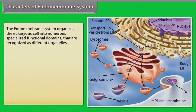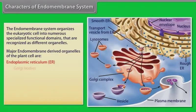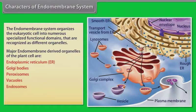The endomembrane system organizes the eukaryotic cell into numerous specialized functional domains that are recognized as different organelles. Major endomembrane-derived organelles of the plant cell are: Endoplasmic reticulum, Golgi bodies, Peroxisomes, Vacuoles, Endosomes, Autophagosomes, and Outer nuclear envelope.